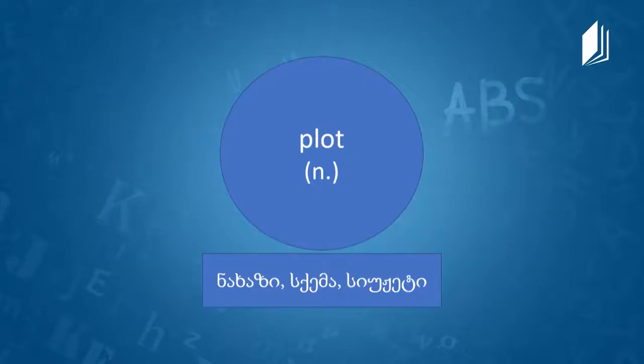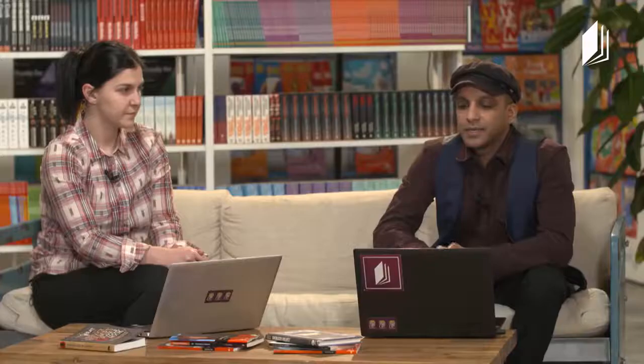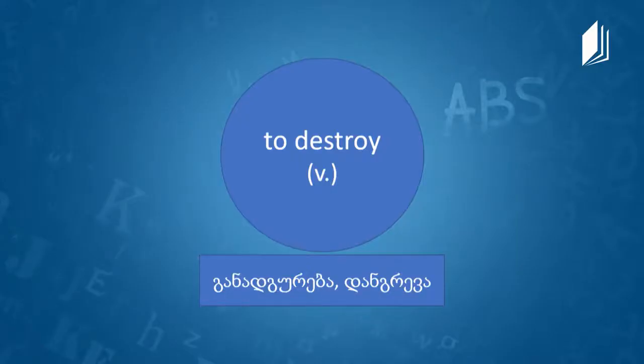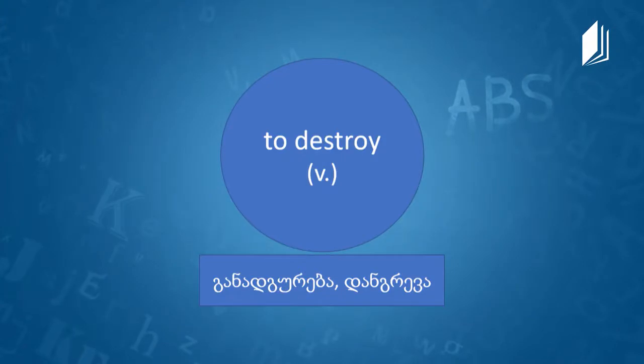Our next word is "plot." It's a noun — a secret plan or scheme to accomplish some purpose, especially a hostile, unlawful, or evil purpose. We have a verb next: "to destroy" — to put an end to, to extinguish, to kill, to slay, to render ineffective or useless.